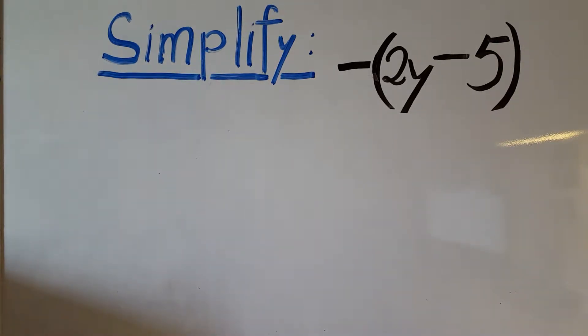All right, in this problem they want us to simplify the expression -(2y - 5). This is a fairly simple one. All we have to do is use the distributive property to take this negative and distribute it inside.